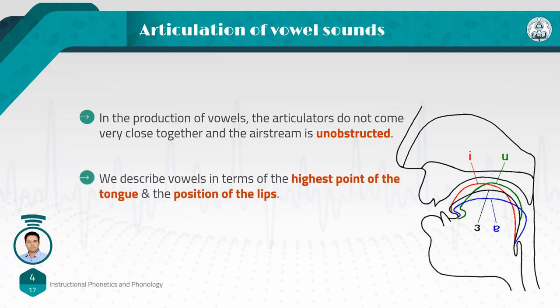We describe vowels in terms of the highest point of the tongue and the position of the lips. In order to describe vowel sounds, we consider the way in which the tongue influences the shape through which the airflow must pass. Look at the picture on the right side. As you can see, there is a correspondence between the color and the vowel that we produce, like 'ee,' which is illustrated in red. You can see the position of the tongue in the mouth — it is higher than when we produce 'e' or 'a.'